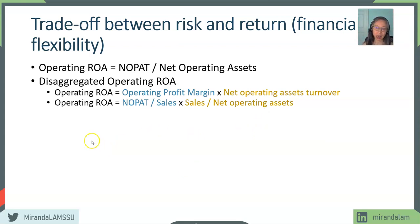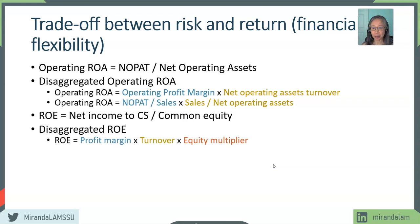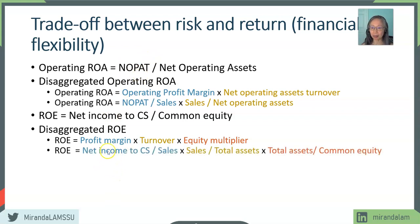We can also relate ROE — return on common equity — to its components. ROE is net income available to common stockholders divided by common equity. We can disaggregate this the same way we have seen before into three components: profit margin, turnover, and equity multiplier — that is, net income to common stockholders divided by sales, times sales divided by total assets, times total assets divided by common equity. We can also replace these with operating components.